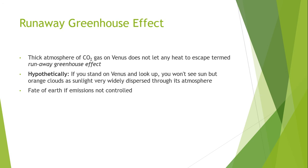Some evidence for this scenario comes from the extremely high deuterium-to-hydrogen ratio in the Venus atmosphere — roughly 150 times that present on Earth — since light hydrogen would have escaped from the atmosphere more readily than its heavier isotope, deuterium.